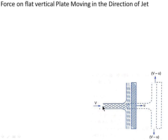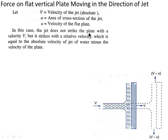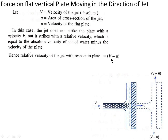We can consider V as the velocity of jet — it is the absolute velocity — and small A as the area of cross section of jet. U is the velocity of the flat plate. In this case the jet does not strike the plate with velocity V but it strikes with the relative velocity, which is equal to V minus U.